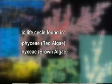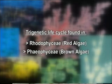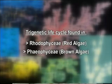This type of life cycle is found in the members of Rhodophyceae or red algae and Phaeophyceae or brown algae. Here, the haploid or diploid phases may occur twice in the life cycle.